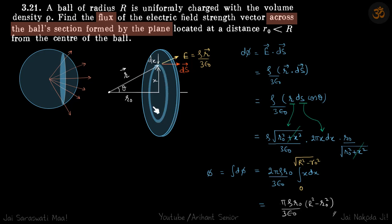On this ring, electric field is going to be same everywhere and its value will be rho r by 3 epsilon. This is a standard result for electric field inside a uniformly charged sphere.